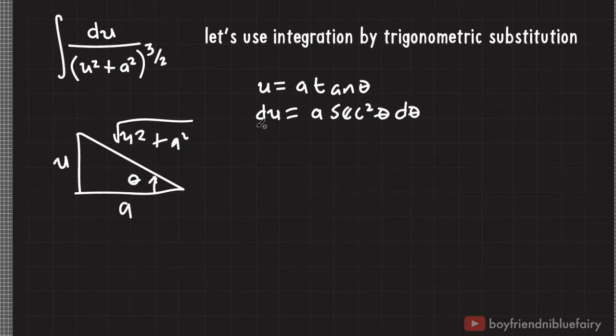Also, from the figure, we could deduce that cosine theta is equal to the adjacent, which is a, divided by the hypotenuse, which is square root of u squared plus a squared.